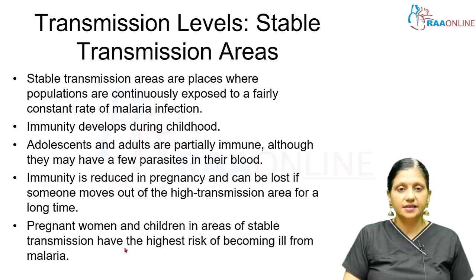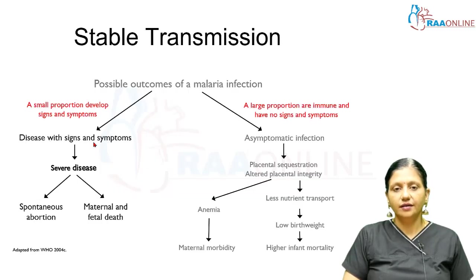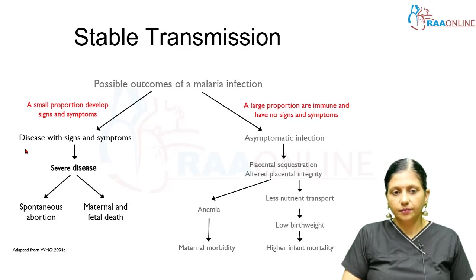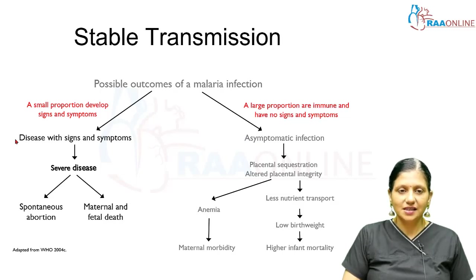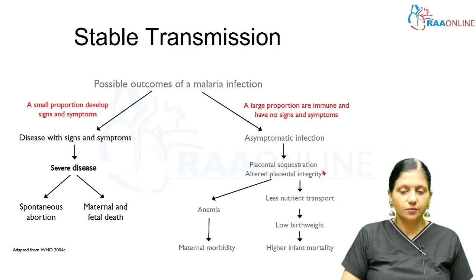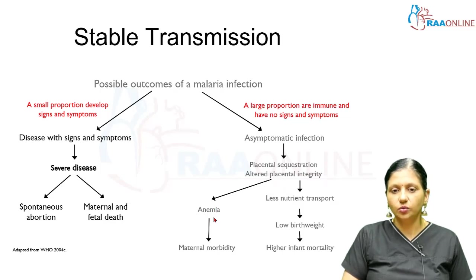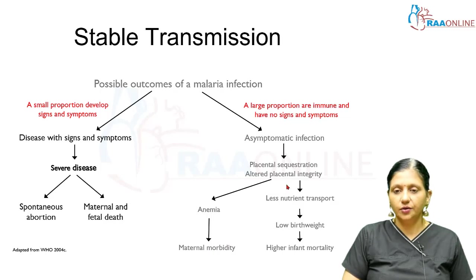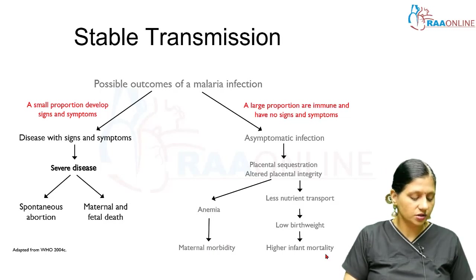If a person gets infected with malaria in Africa, the disease can manifest with signs and symptoms, or the person may be asymptomatic. If symptomatic, it can be severe, leading to miscarriages and maternal and fetal deaths. If a pregnant woman gets an asymptomatic infection, placental sequestration of the malaria parasite occurs, altering placental integrity. This can lead to anemia due to hemolysis, maternal morbidity and death, inadequate fetal nutrition, low birth weight, and intrauterine growth restriction.